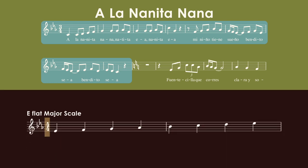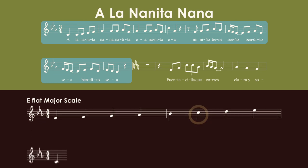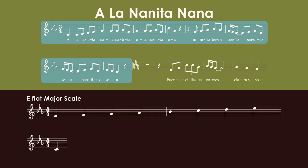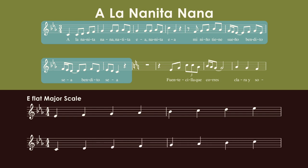If we look at the E flat major scale, C natural is here — it's the sixth scale degree. Now what if, since the music is telling us that C natural is so important, we use that C natural as a starting note of the scale, but we use the E flat major key signature to fill out the rest of the notes? This is what we get — this is the C natural minor scale.